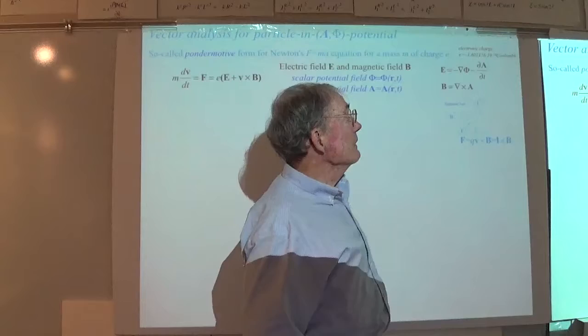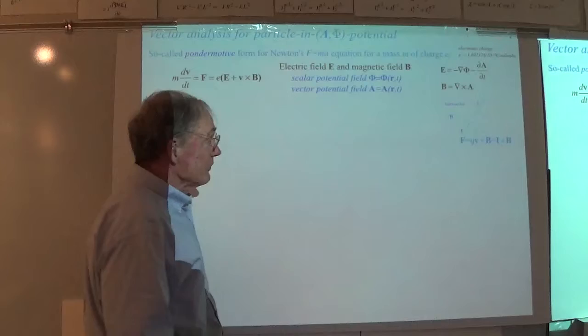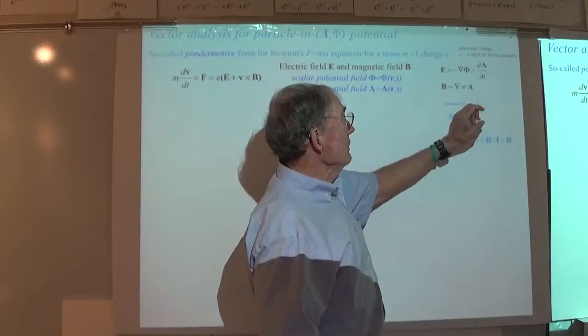Also, if there's a streaming vector potential around, it's the time derivative that determines — with a minus sign — the electric field. And then the B field is the one associated with the vector potential — it's just a curl. We mentioned that was one of the applications of complex variables.